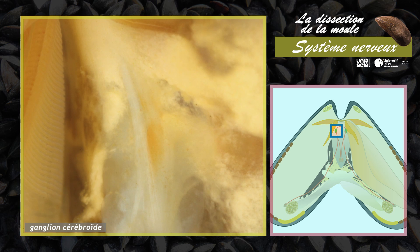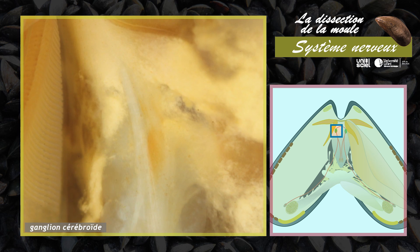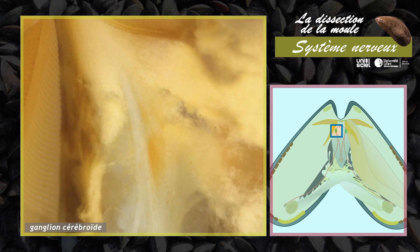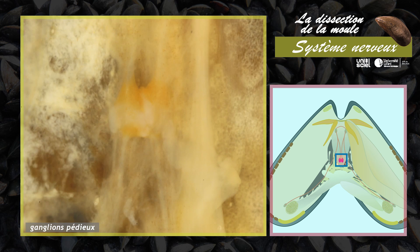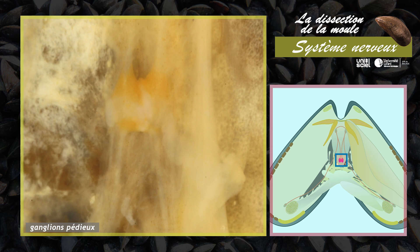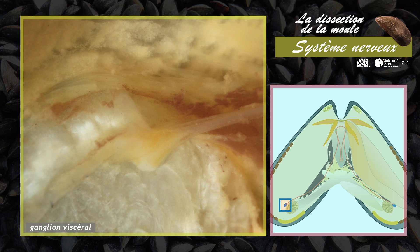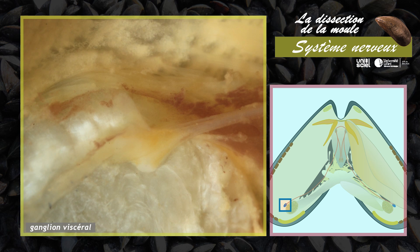Des ganglions partent des fibres innervant le manteau, la bouche, le pied et les organes de la masse viscérale.